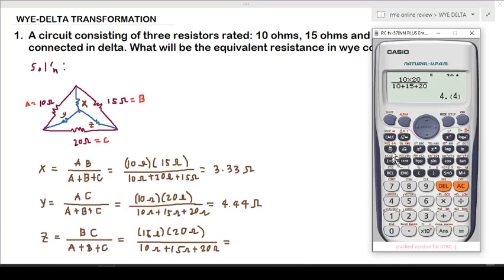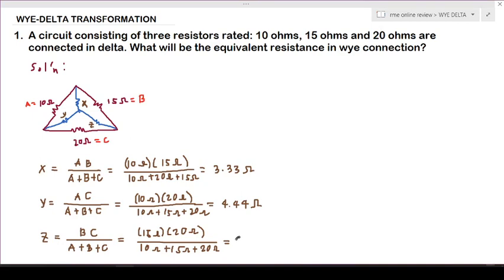That equals 6.67 ohms. So we have 6.67 ohms for Z, and these are now the equivalent resistances of our wye connection.